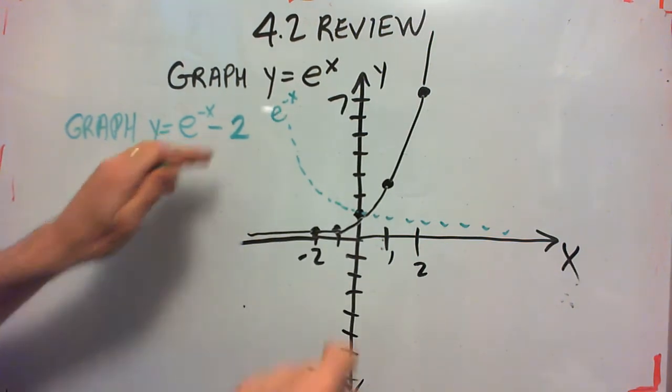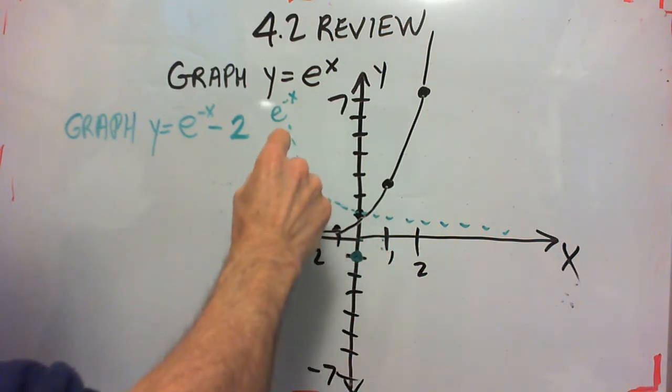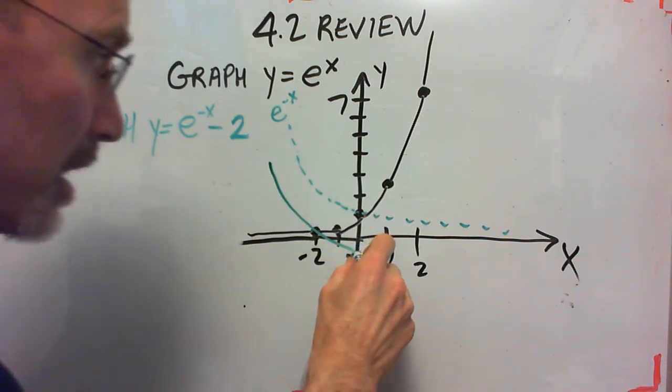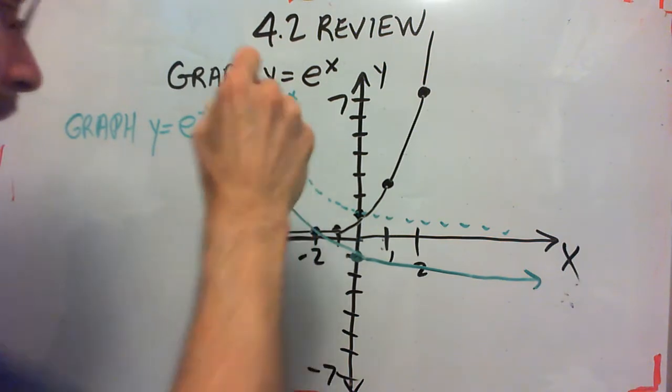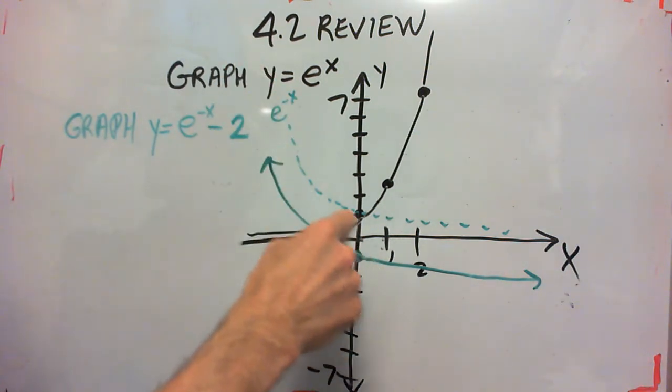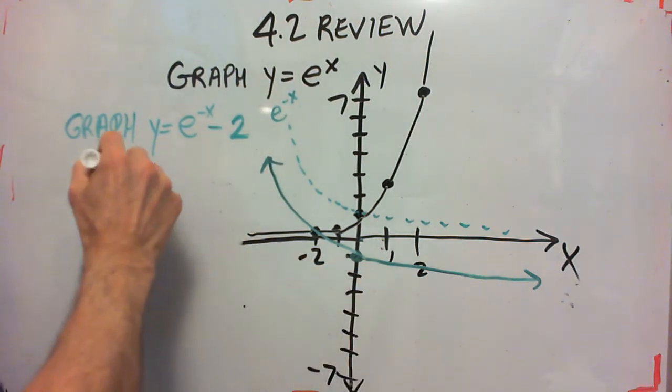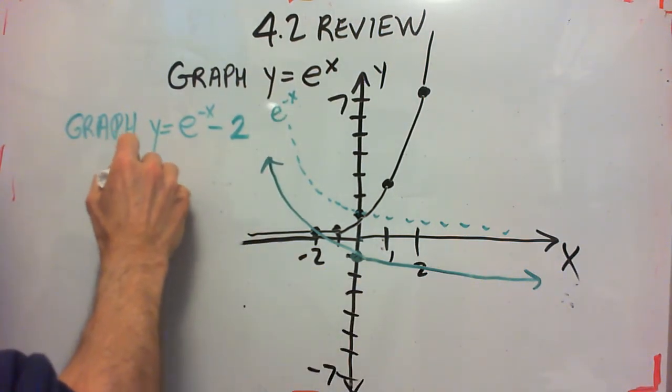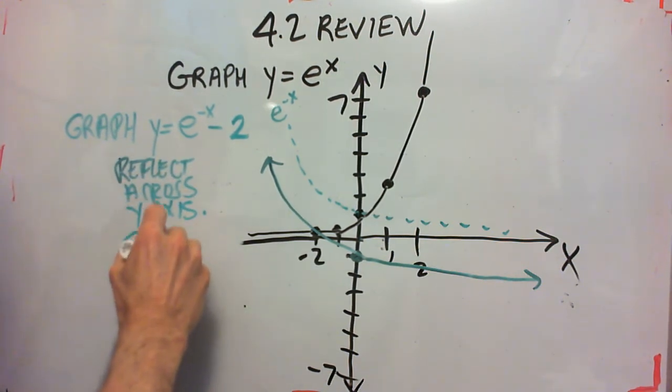But when we're shifting it down 2, so we go down 1, 2, and we get this graph. I'm not even going to find the points. Mostly I just want to talk about what would you do to e to the x to get this graph in green. What you have to do is reflect across the y axis and then shift down 2.